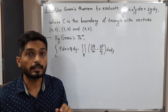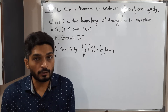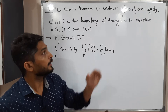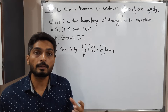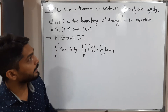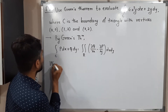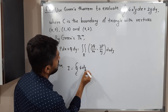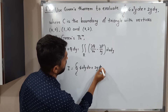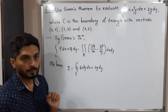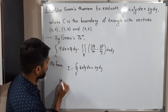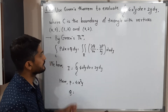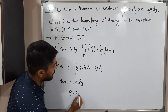We have to find the value of the line integral, so we solve the double integration and that value will be the value of the line integral. Let us compare the given integral with the formula. The given integral is I equal to integration over C of 4x²y dx plus 2y dy. Comparing: P is 4x²y and Q is 2y.